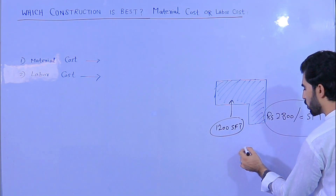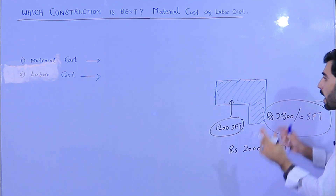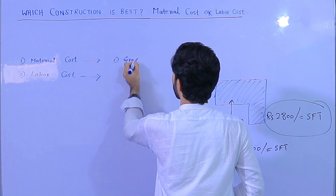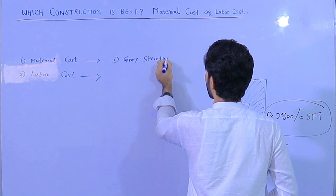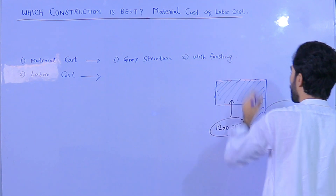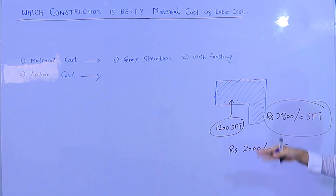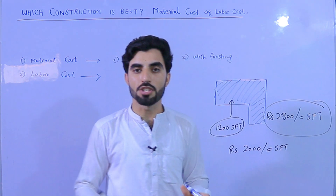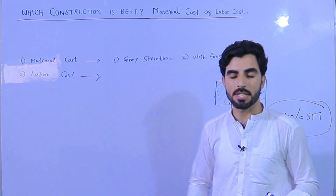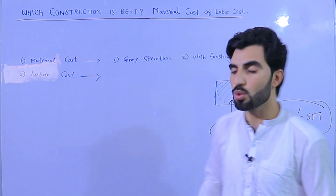For a normal house, you can pay about 2000 rupees per square feet. In material cost, we also have two types: the first one is gray structure and the second one is with finishing. With finishing, the rate is about 2200 per square feet — that includes tiles, marble, and everything from start to finish; they will just hand you the keys. For gray structure, rates vary: 1100, 1400, or 1500 per square feet — there are different categories.